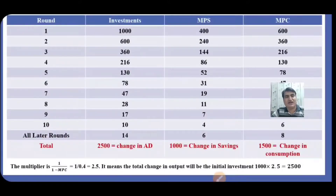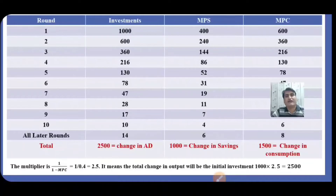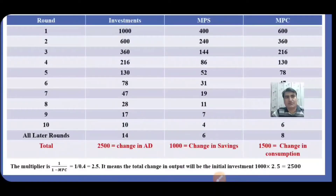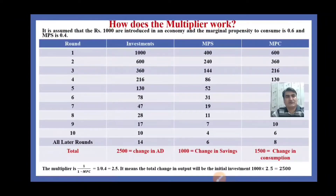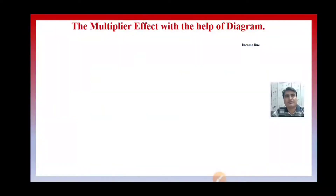So, by investing 1000, real GDP will rise by 2500. This is the whole process through which the multiplier functions, because the investment is reinvested again at the same proportion of marginal propensity to consume and marginal propensity to save.